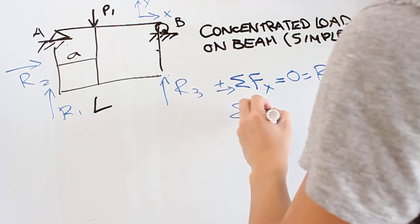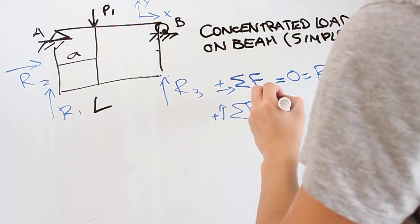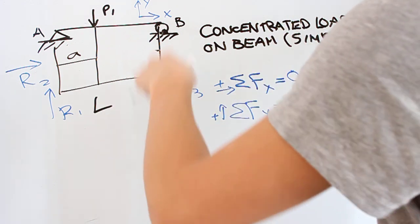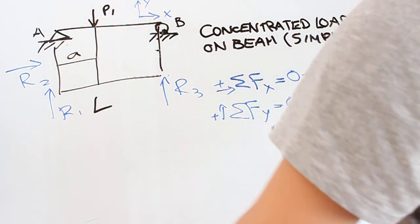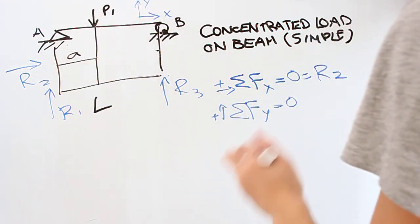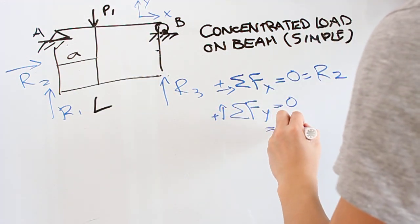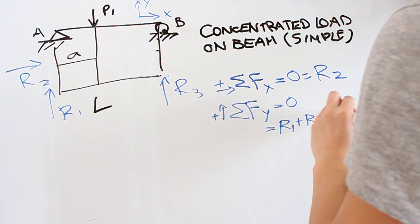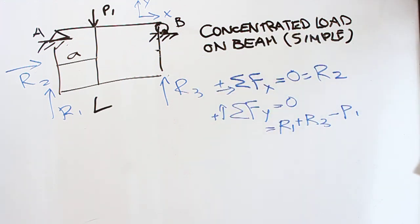Next, we're going to look at Fy. How does that equal zero? Well, there's three forces we've drawn. R1 and R3 are positive in our sense, and P1 is negative. So let's write that right now: R1 plus R3 minus P1. And that's our second equation.